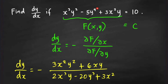For ∂f/∂x: copy the constant y² and take the derivative of x³ giving 3x², the −5y⁴ term is constant so its derivative is zero, and then copy y times the derivative of 3x² which is 6x. For ∂f/∂y: x³ times 2y gives 2x³y, minus 20y³, plus 3x² times 1. This matches our earlier result.